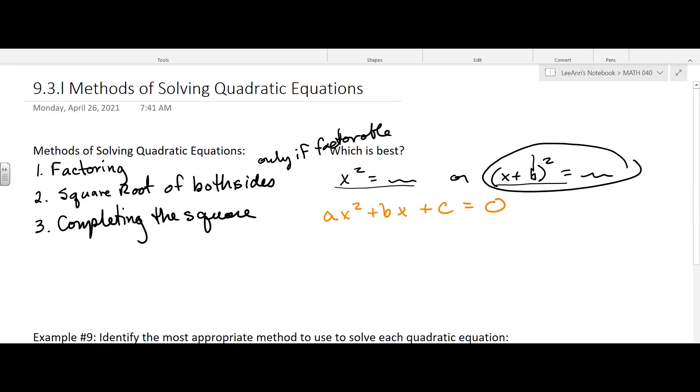I would only use completing the square if, I would use it's best, if a equals one and b is even. So I would look at those. If a is one and b is even, then I would complete the square. It'll be easier than the formula and you won't have a bunch of fractions.